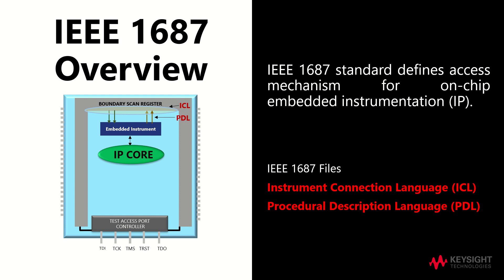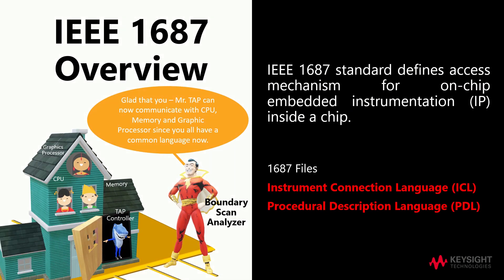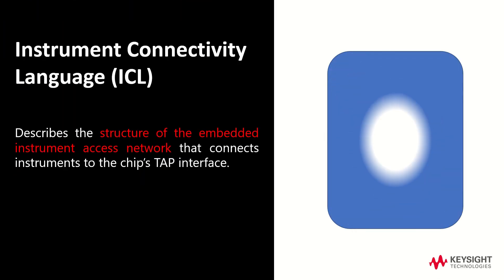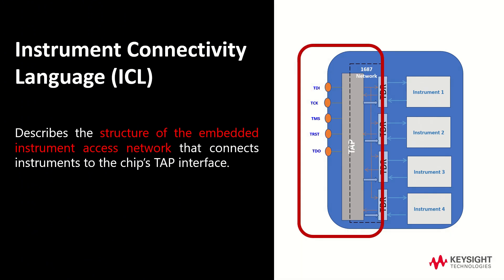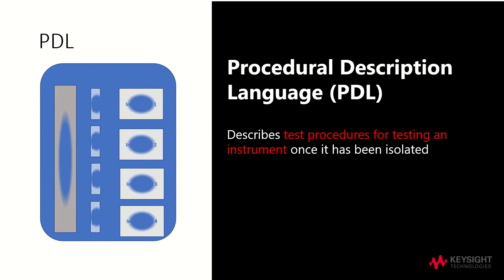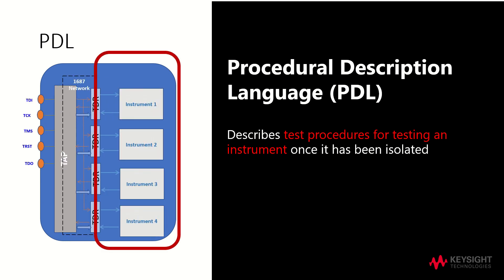IEEE 1687 files include the Instrument Connection Language (ICL) and Procedural Description Language (PDL). To simplify this concept, IEEE 1687 is a form of access for the boundary scan analyser to standardise the language to English. The files ICL and PDL will represent both grammar and vocabulary that are required for the chips to communicate effectively with the TAP controller. The Instrument Connectivity Language file, ICL, describes the structure of the embedded instrument access network that connects instruments to the chip's TAP interface. On the other hand, the Procedural Description Language file, PDL, describes the test procedures for testing an instrument once it has been isolated.